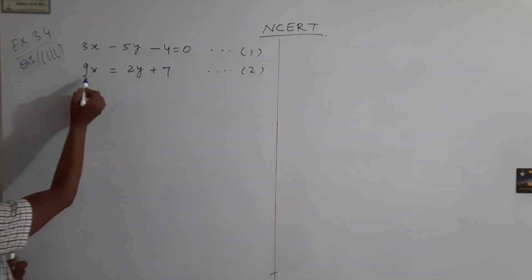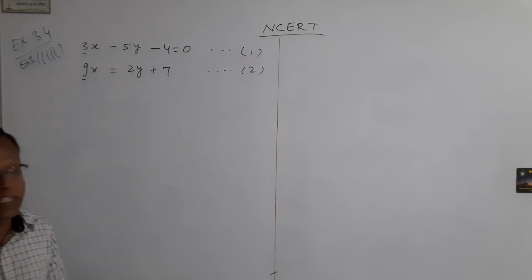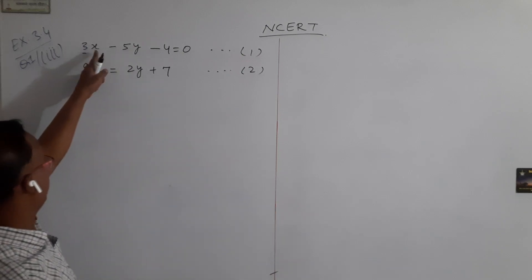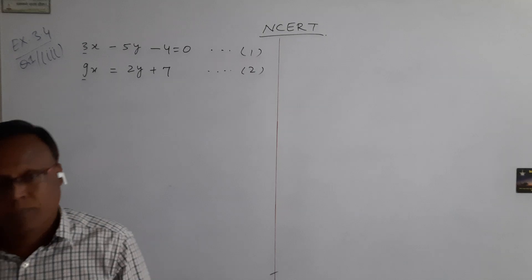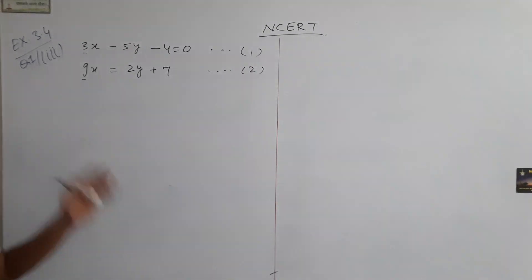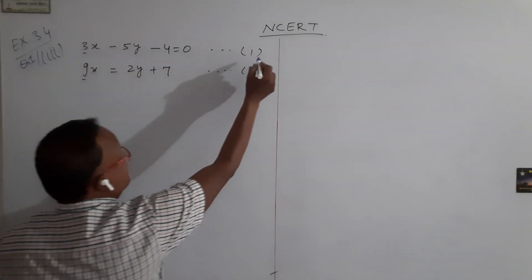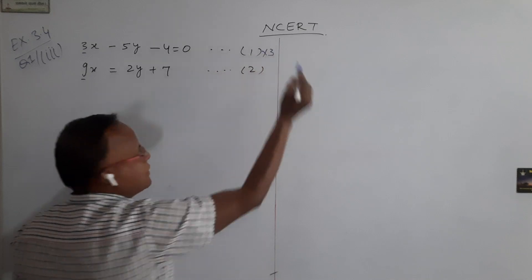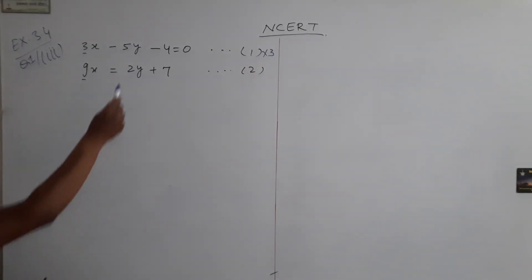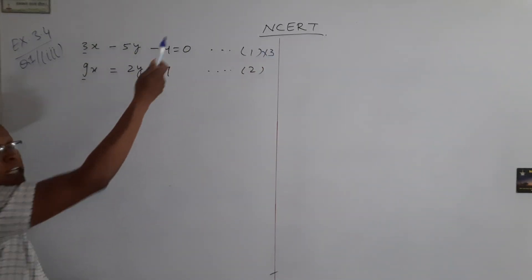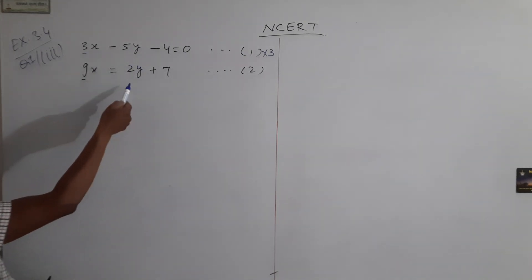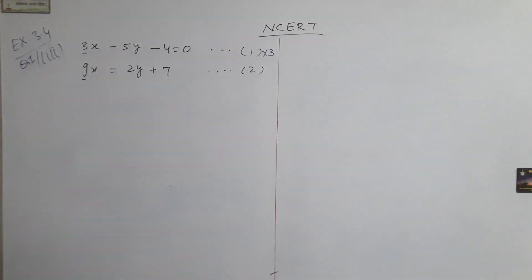Now see here, coefficient of x is 9 in equation 2 and coefficient of x is 3 in equation 1. So in the elimination method, we have to make this coefficient the same. That's why equation 1 I multiply by 3. And we arrange it, because here minus 4 is on the left hand side, we take it on the right hand side. And equation number 2, 7 is on the right hand side, we take it on the left hand side.